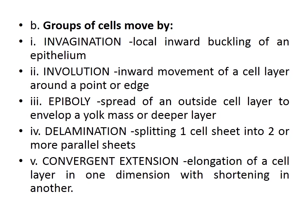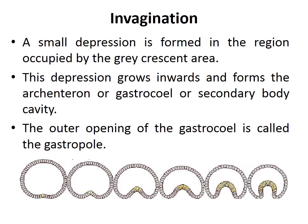Delamination is the splitting of one cell sheet into two or more parallel sheets. Convergent extension refers to the elongation of a cell layer in one dimension with shortening in another.